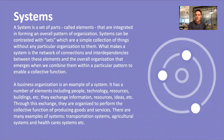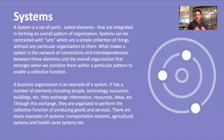The human body is a system. A house is a system because it organizes all those parts in a particular way for someone to live in it. What makes a system is a network of connections and interdependencies between the elements, and the overall organization that emerges when we combine them within a particular pattern to enable a collective function. It's that idea of emergence — when we put things together in a particular way, something different emerges: an overall function. The human body is not just a collection of cells; we experience ourselves as an overall entity, a being able to do things as a whole.